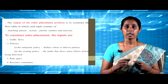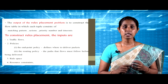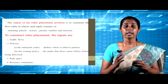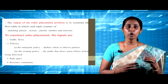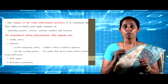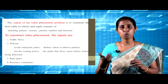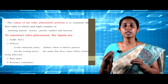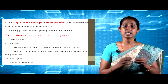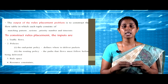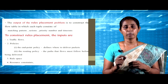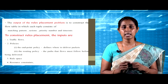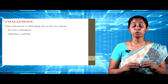To construct a rule placement solution, the inputs are traffic flows, policies, rule space, and resource constraints. Traffic flow represents the network traffic. Policies defined by the operator can be classified into two categories: the endpoint policy, which defines where to deliver the packets such as choosing the cheapest link, and routing policies, which indicate the paths that flows must follow before delivering the packets. Rule space defines the set of all possible rules depending on the application. Resource constraints include memory, bandwidth, and CPU capacity of the controller and nodes.